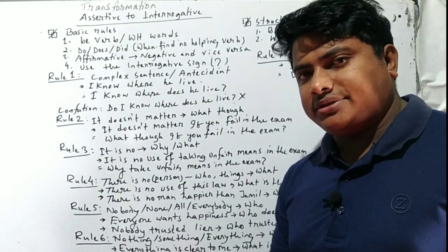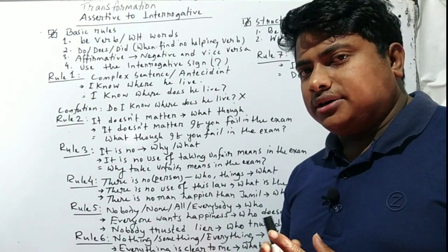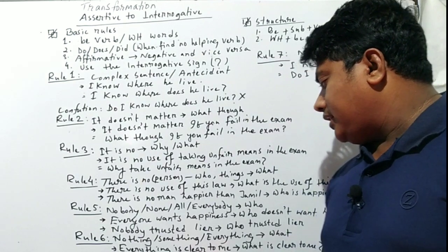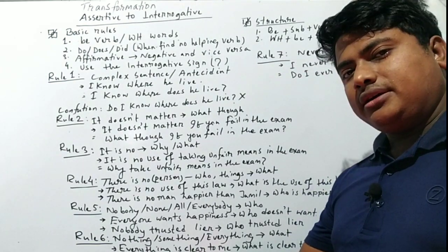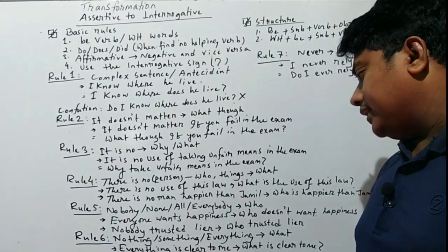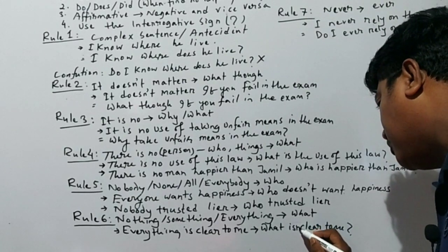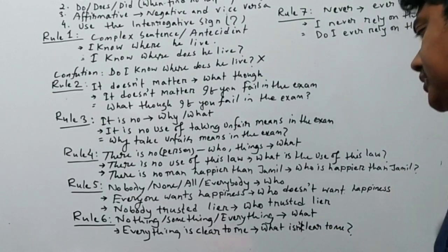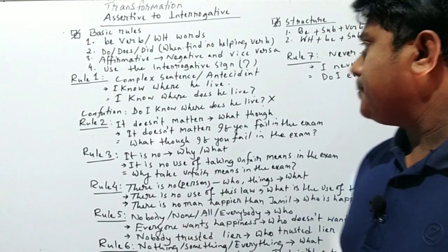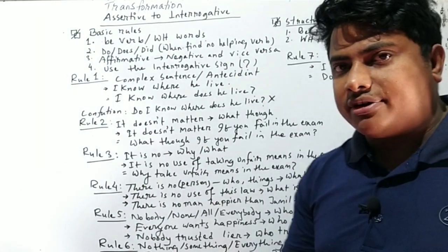Another important rule: nothing, something, and everything are replaced by 'what' in interrogative sentences. Remember that 'something' and 'everything' are positive while 'nothing' is negative. Example: 'Everything is clear to me.' Since 'everything' is positive, we use 'what' with 'is not': 'What is not clear to me?'